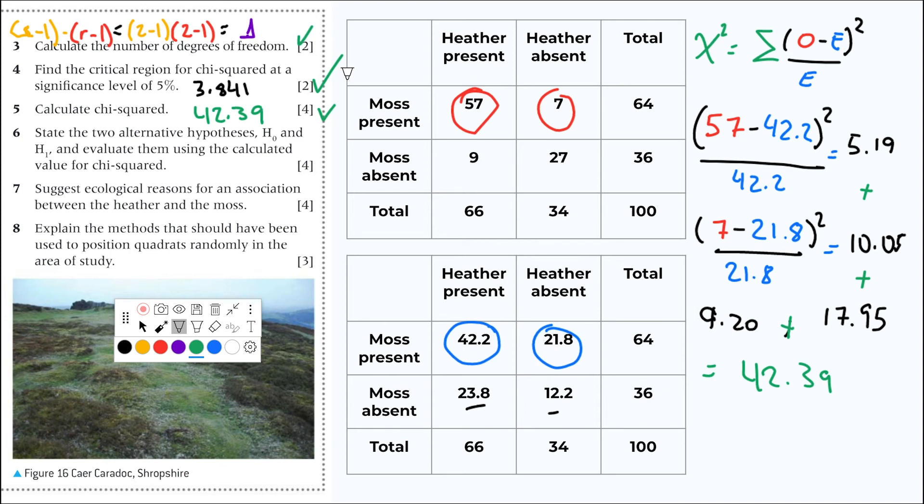Because our calculated chi-square is much larger than the critical region at a significance level of 5%, we reject the null hypothesis. We reject the null hypothesis because our chi-square, calculated chi-square is larger than the critical region at a significance level of 5%. You do this, and you've got four more marks.